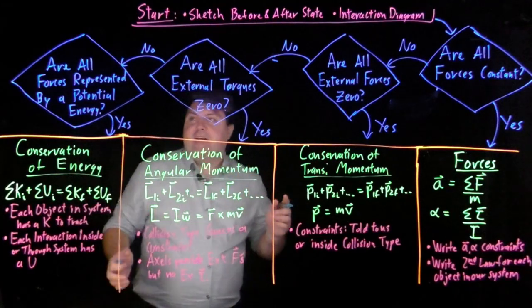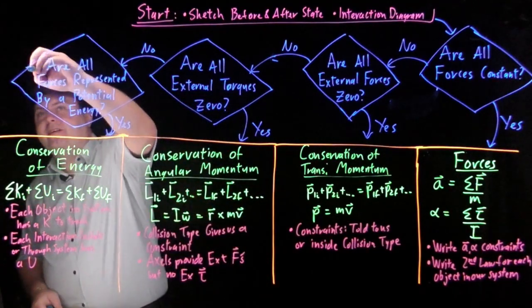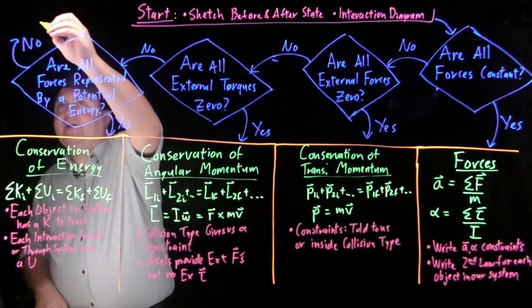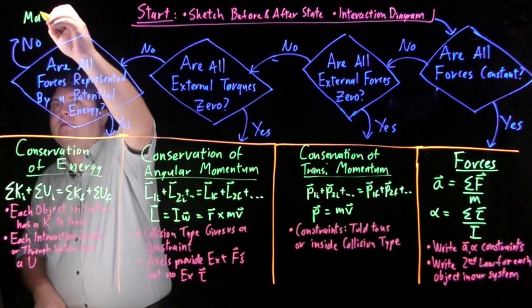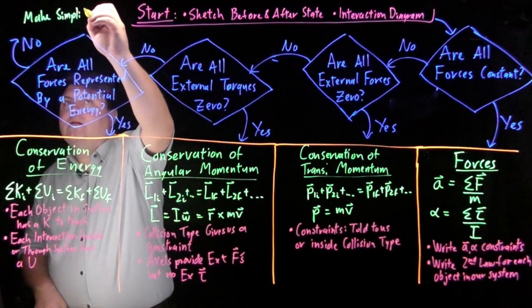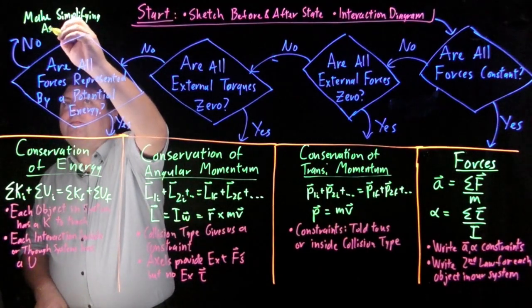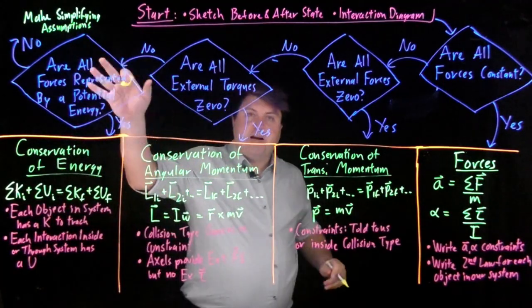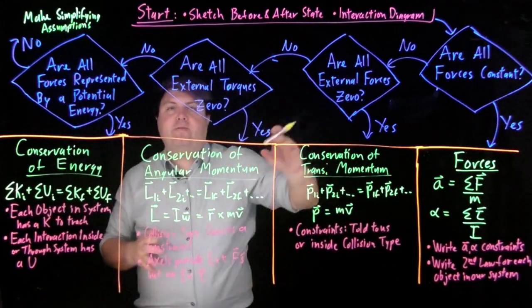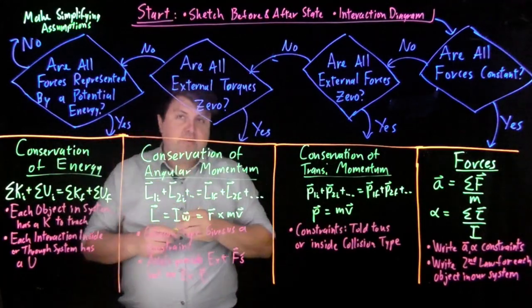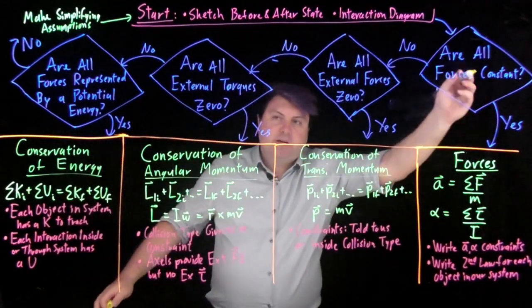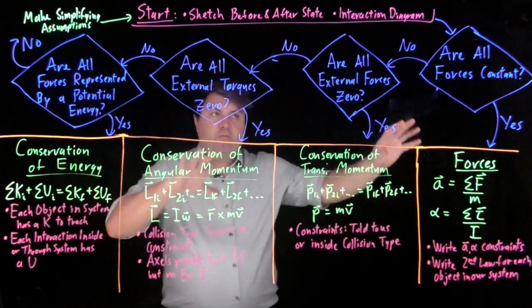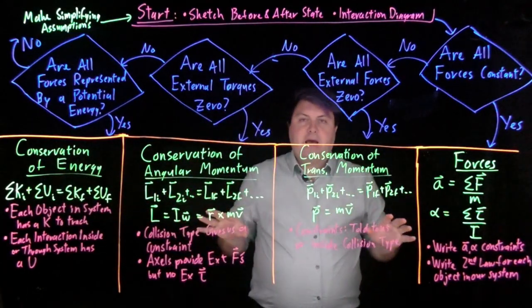What happens, crazy enough, if we have to say no here? If we have to say no here, then what we have to do is we have to make more simplifying assumptions. Maybe we change our interaction diagram, change what's defined as our system, whether forces or torques are external. And if that's the case, then we go back to the start and we continue this all over again. So this is a good way to determine which framework we want to look at at any given time.